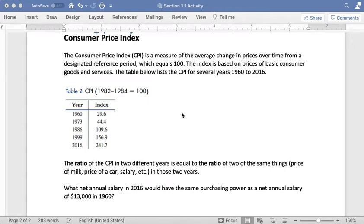In this video, we're going to look at something called the Consumer Price Index. Consumer Price Index measures the average change in prices over time. So we have our designated reference period set to equal 100, and we can compare different time periods before and after our reference period.